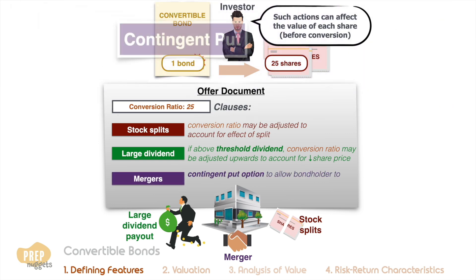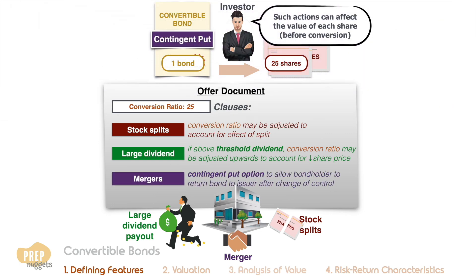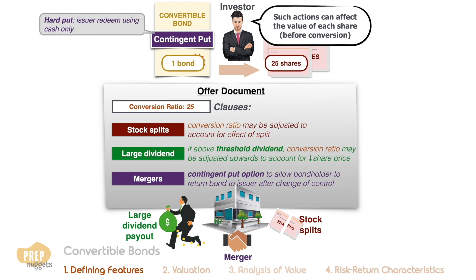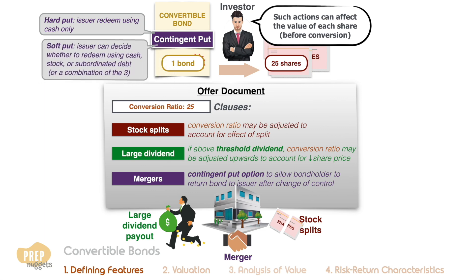For mergers and acquisitions, a contingent put option may be embedded to allow the bondholder to return the bond to the issuer after the change of control. Such put options can be hard puts, where the issuer must redeem using cash only, or soft puts, where the issuer can decide whether to redeem the bond for cash, stock, subordinated debt, or a combination of the three.